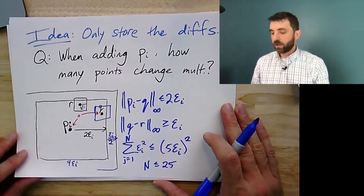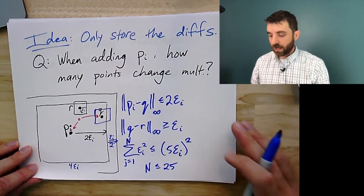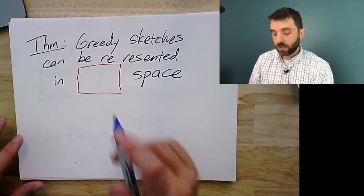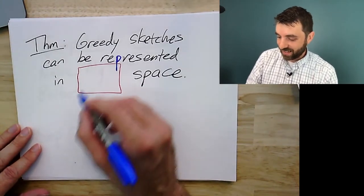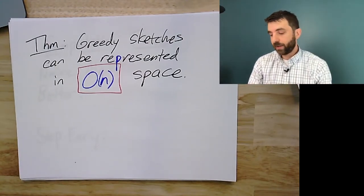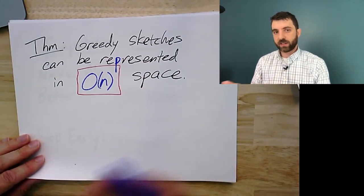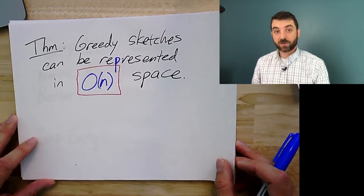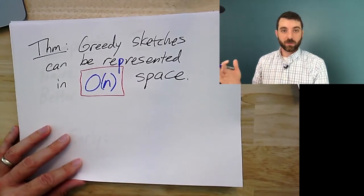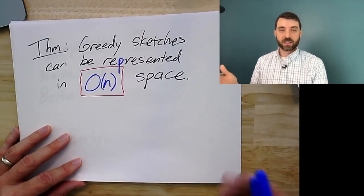In the worst case it's still a constant — probably many fewer in practice. So if I only store the differences in multiplicities from one sketch to the next, I only have to store a constant amount of data per step. This leads to the theorem that the greedy sketches can be represented in order-n space — only a small constant factor blowup. And now I have what I think is quite powerful: this approximation for pretty much any ε, because you can store the εᵢ values too and know what the error is at each step.